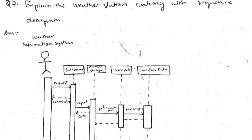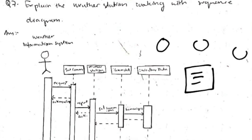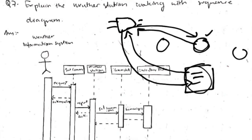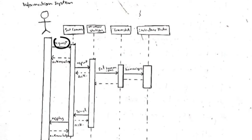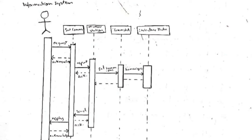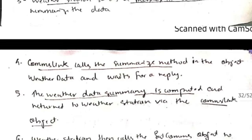Weather station sequence diagram: the weather station needs information about weather in different parts of the world. It sends a signal requesting information; the satellite points to the location where information is present; that location sends information back to the satellite, which transfers it to the weather information system. In the diagram: the information system requests to SAT comms, which sends a report to the weather station. To get a summary, comms link and weather data objects are used; they send the summary to SAT comms, which sends it to the information system.